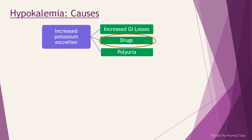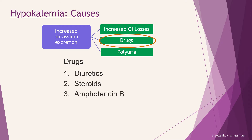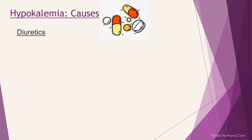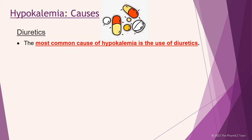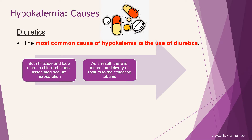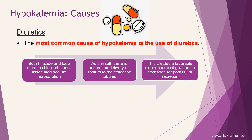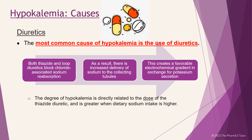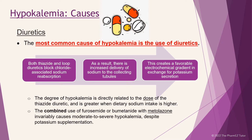There are three key drugs that cause hypokalemia: diuretics, steroids, and amphotericin B. The most common cause of hypokalemia is the use of diuretics. Both thiazide and loop diuretics block chloride-associated sodium reabsorption. As a result, there is increased delivery of sodium to the collecting tubules, creating a favorable electrochemical gradient in exchange for potassium secretion. The degree of hypokalemia is directly related to the dose of the thiazide diuretic and is greater when dietary sodium intake is higher. The combined use of furosemide or bumetanide with metolazone invariably causes moderate to severe hypokalemia despite potassium supplementation.